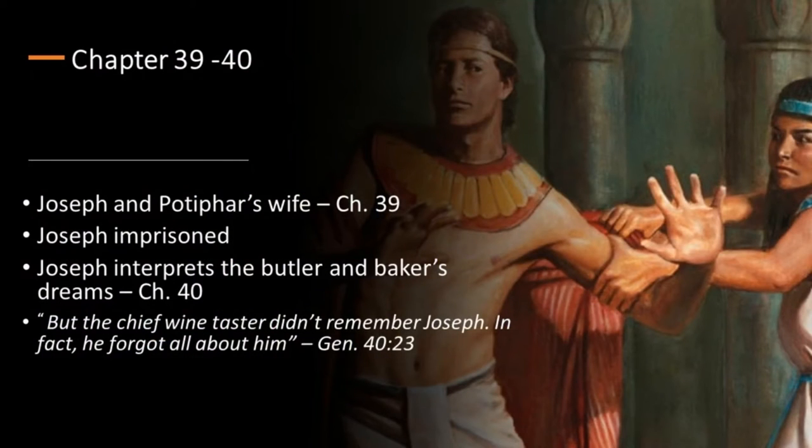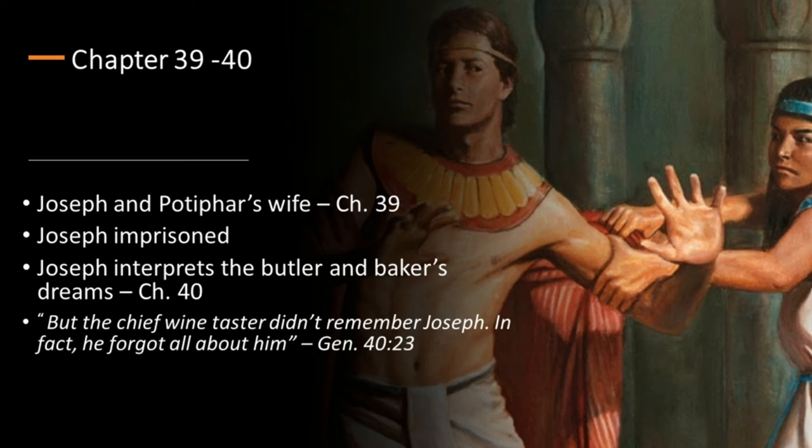Chapter 39 returns to Joseph — in Potiphar's house, how he resisted the seduction of Potiphar's wife, and how Potiphar's wife implicated him and he was thrown in prison. While in prison, he interpreted the dreams of the butler and the baker. He told the butler that Pharaoh was going to restore him in three days, and told the baker he was going to die in three days. He asked the butler: when you get to the palace, please don't forget me. But the chief wine taster did not remember Joseph — in fact, he forgot all about him.